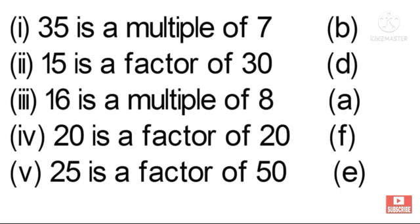20, 20 is a factor of 20. Number 1 and the number itself, every number has the number itself as a factor. Now question 5: 25 is a factor of 50. 25 is a factor of 50 because when we divide 50 by 25, it divides 2 times. Okay.